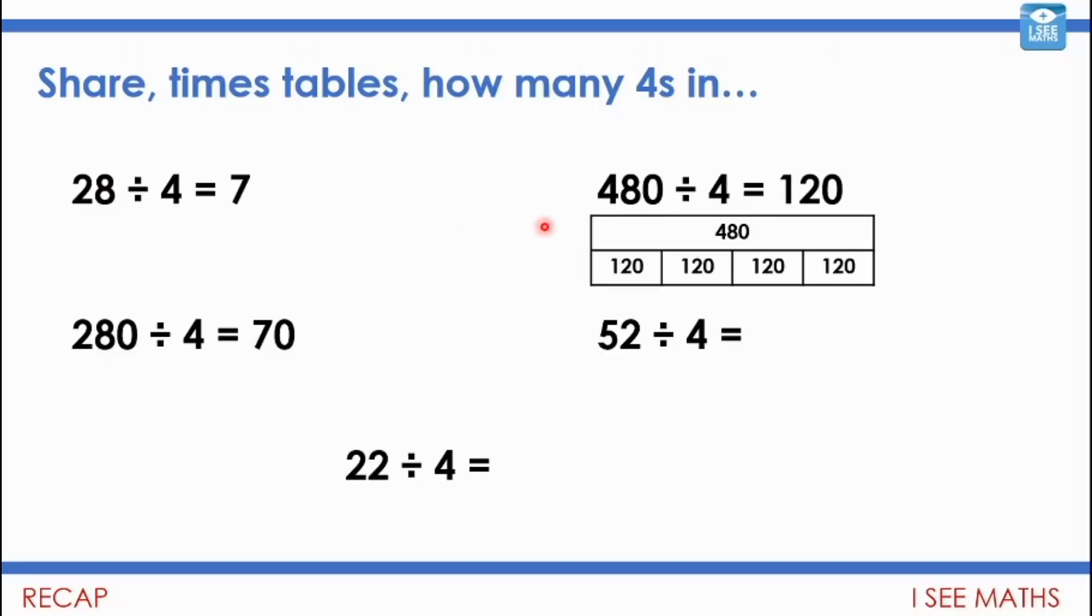Now, for 480 divided by 4, I actually use a slightly different strategy, I can't use my times tables facts. But here, I actually just think, well, if I'm dividing by such a large quantity like this by 4, I can just split that up, half it and half it again. So basically, I'm splitting 480 into these four equal boxes and I'm thinking 120, 240, that's half. So 120 is a quarter, is 480 divided by 4 is 120.